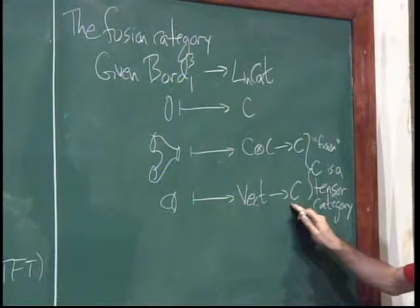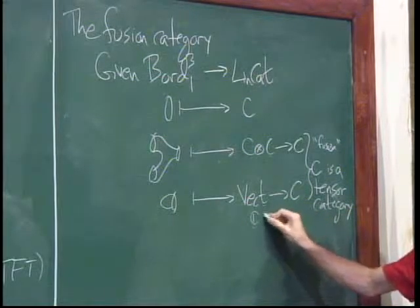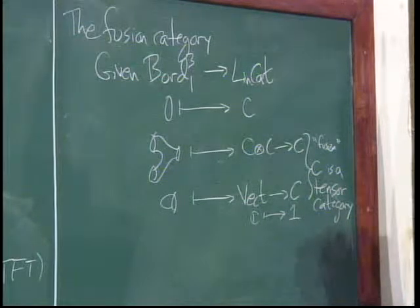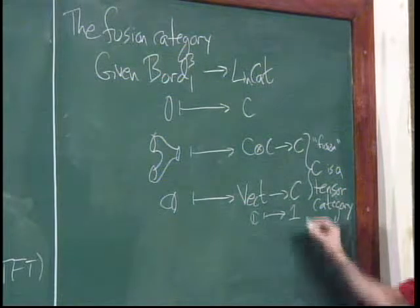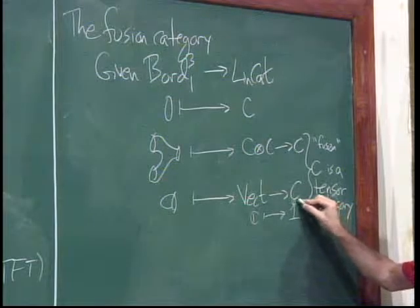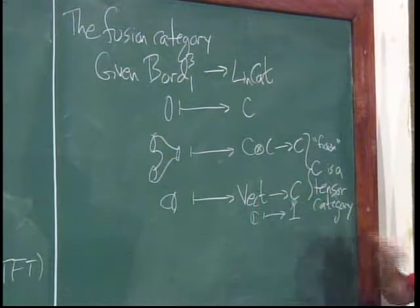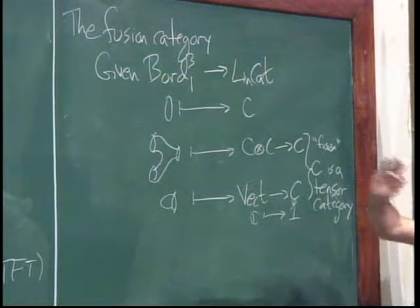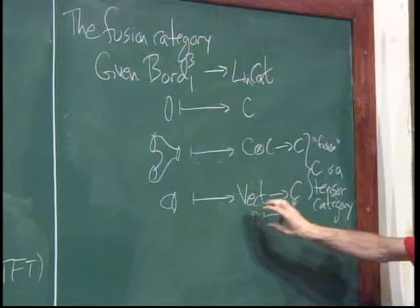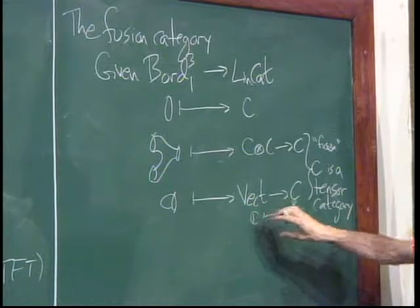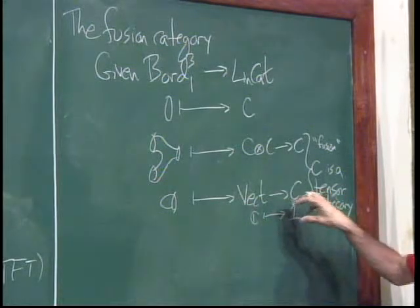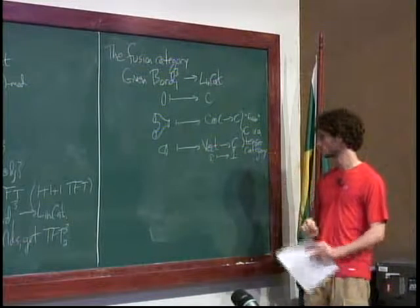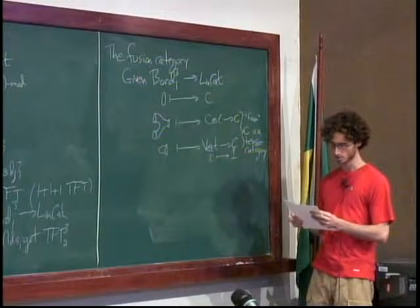I've mapped from Vect to C, and I can think about the image of ℂ under that functor, which is some object of C that I denote 1. This functor is encoded just by that object, because I assumed all functors are linear — direct sums of copies of ℂ map to direct sums of copies of the unit, so the whole functor is determined by what it does on the one-dimensional vector space.